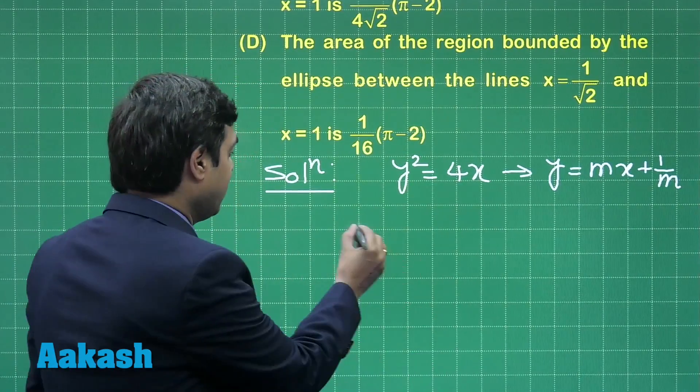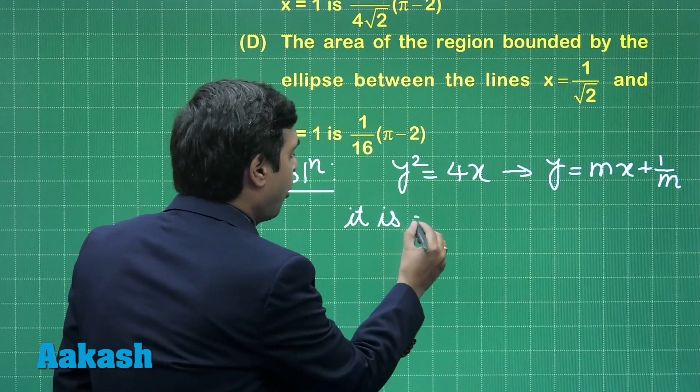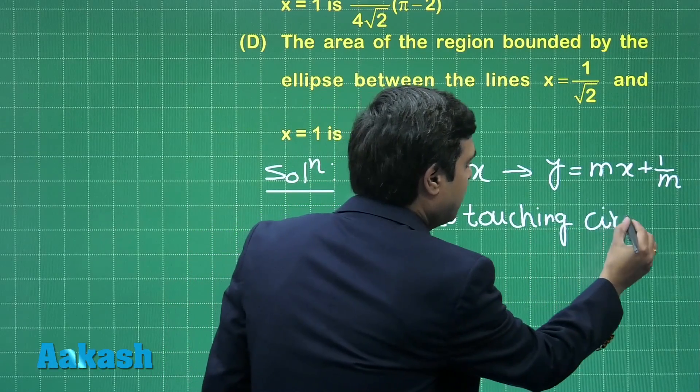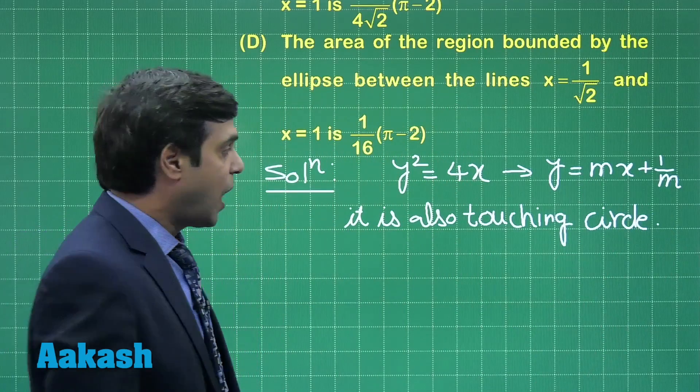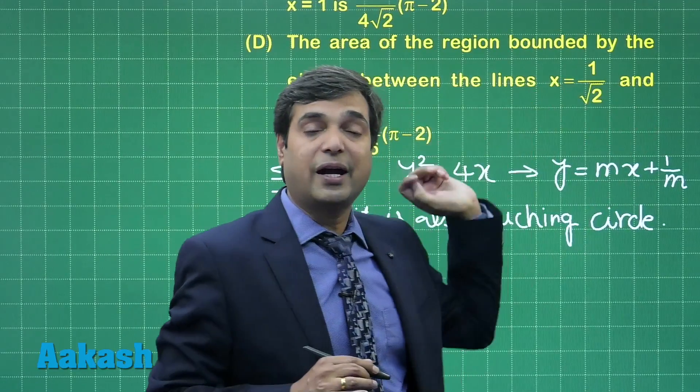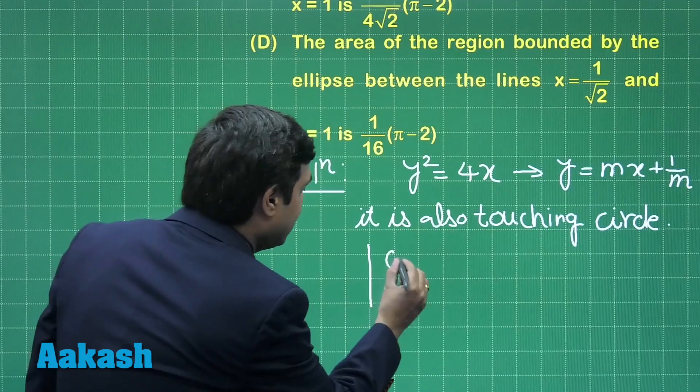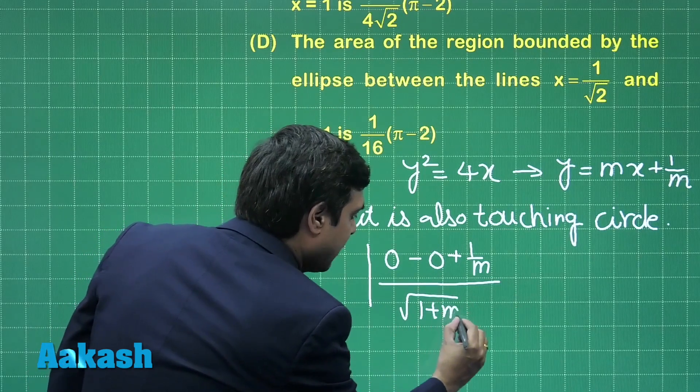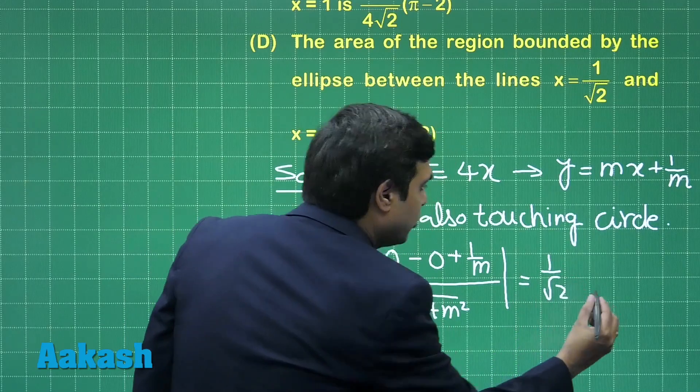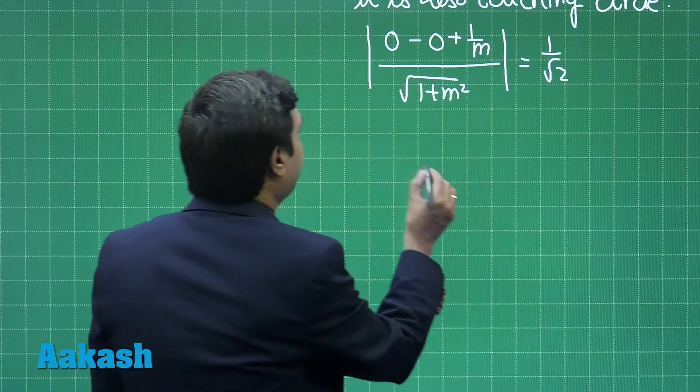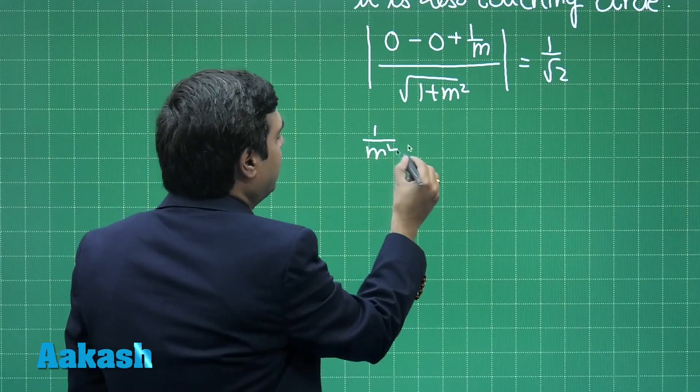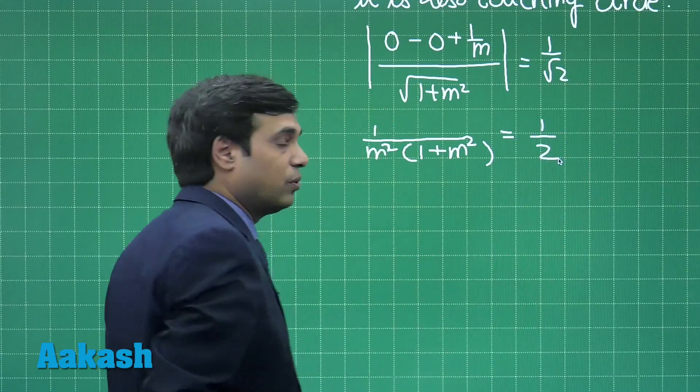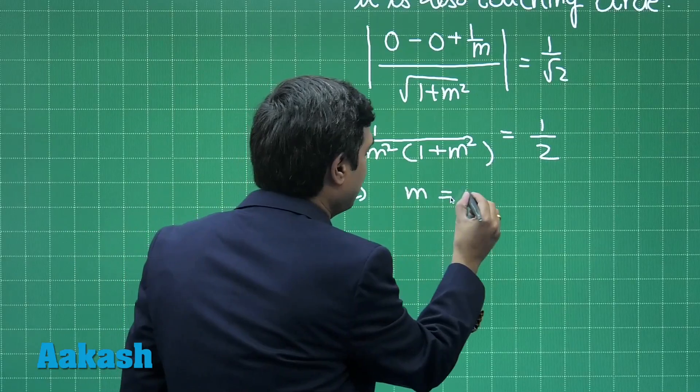This line is also touching the given circle which is x² + y² = 1/2. So drop the perpendicular from center to this line and that would be equal to radius, meaning that |0 - 0 + 1/m| / √(1 + m²) = 1/√2. Squaring both sides we get 1/m² · (1 + m²) = 1/2. Simplifying gives us m = ±1.